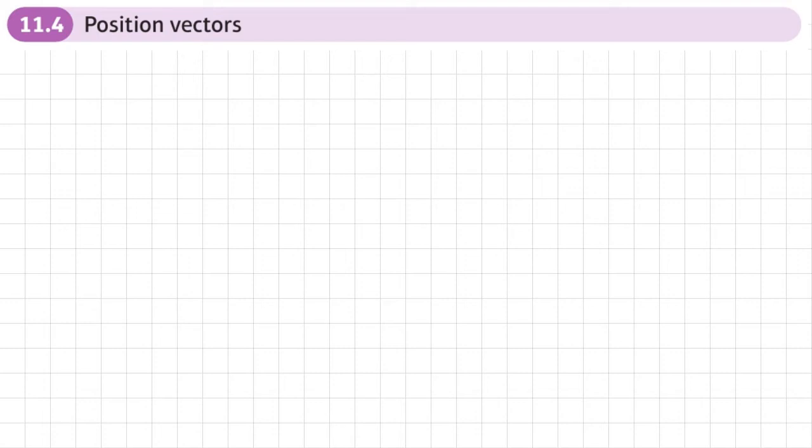This is the full section of chapter 11 on vectors, and this section is about position vectors. Let's say I've got a vector, but I want to find a vector going from A to B.